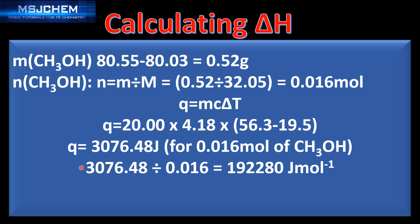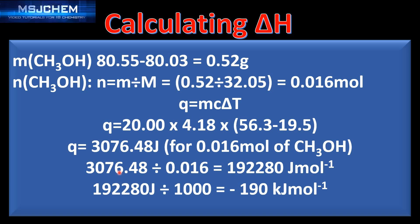The enthalpy change of combustion is for when one mole of methanol is burnt in excess oxygen, so we divide 3076.48 joules by 0.016 moles to give 192,280 joules per mole. Dividing by 1000 and applying a negative sign because the reaction is exothermic, our final answer to two significant figures is negative 190 kilojoules per mole.